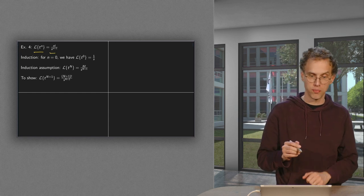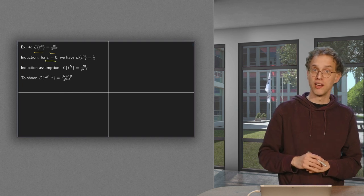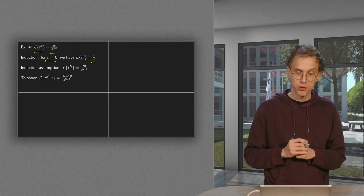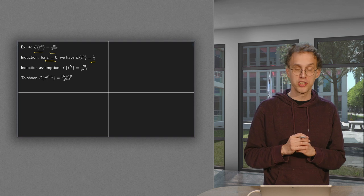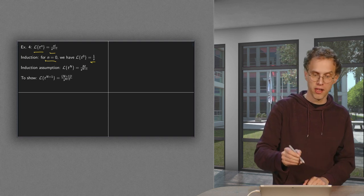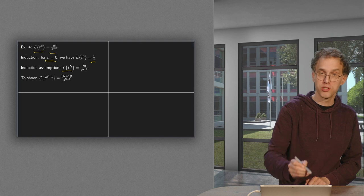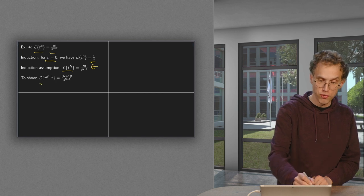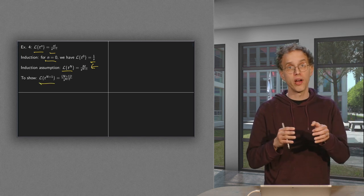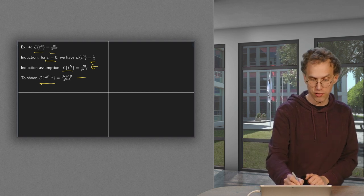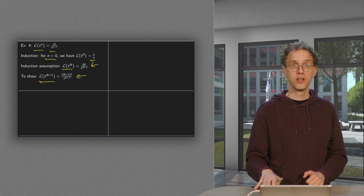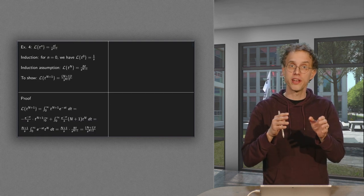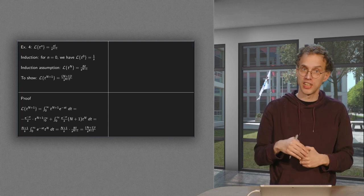We can show this by induction. For n = 0, the Laplace transform of t⁰ = 1 is 1/s, which we already computed. We assume the formula is true up to n = N — that is, the Laplace transform of t^N equals N!/s^(N+1) — and then we prove it holds for n = N + 1. We do this by one integration by parts, because one integration by parts takes us back one step, which is exactly what we need.